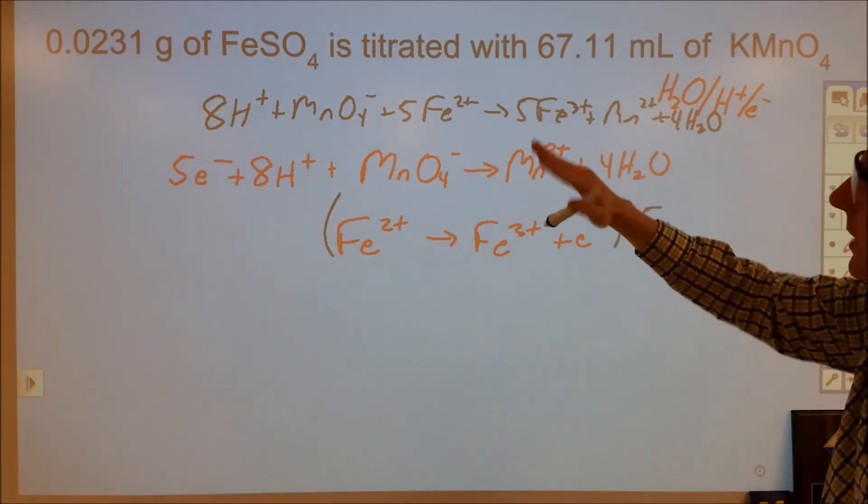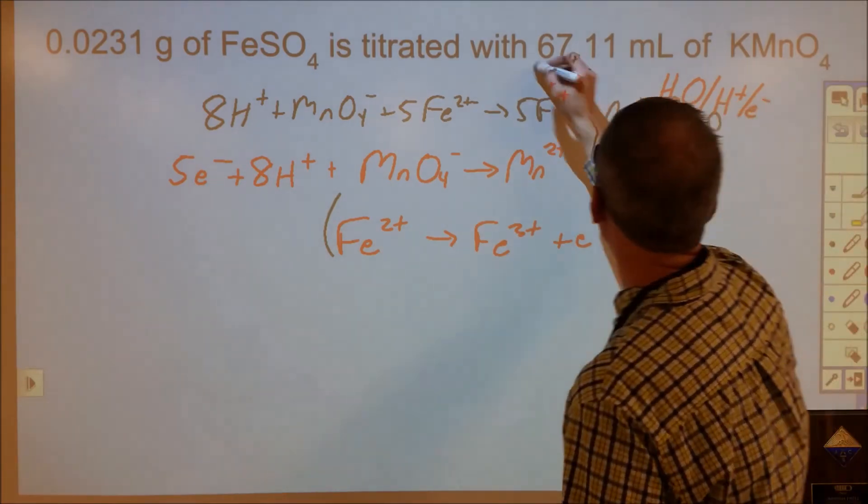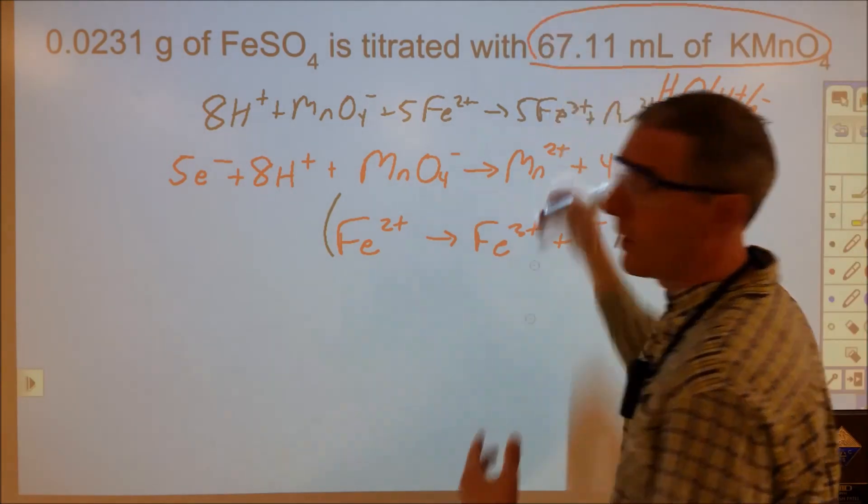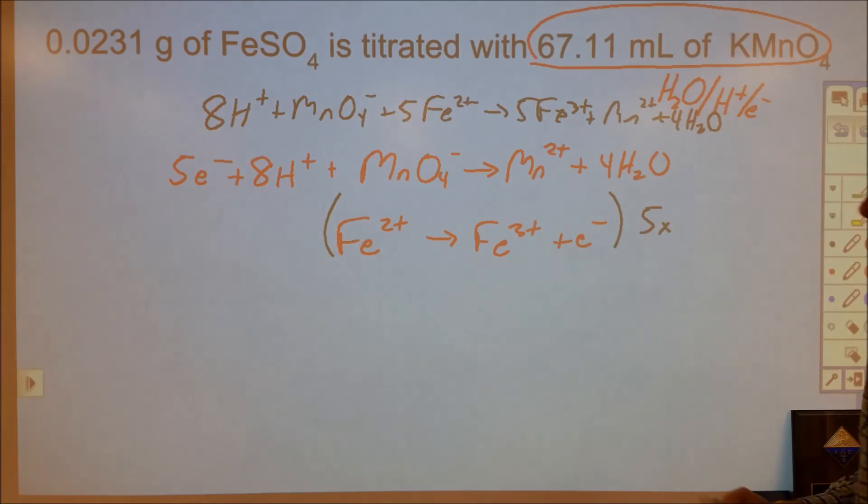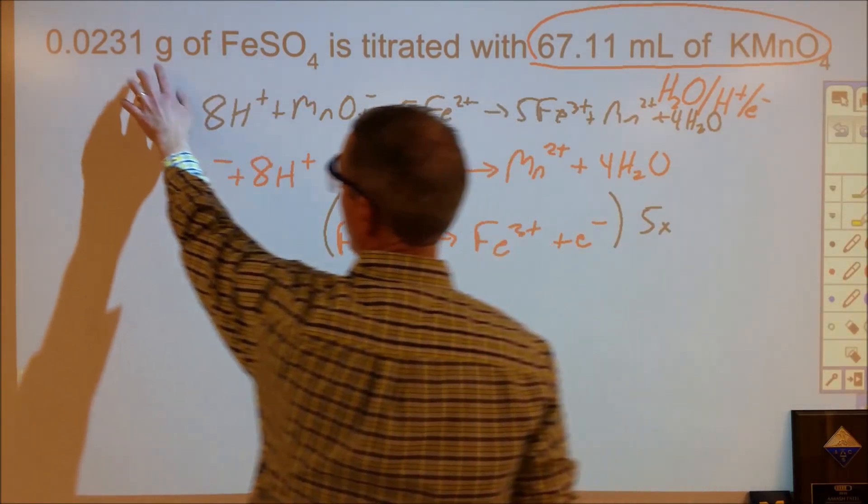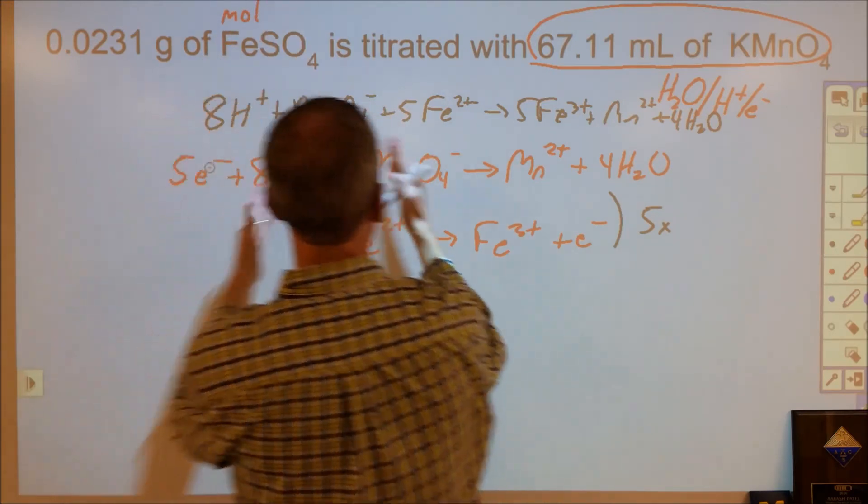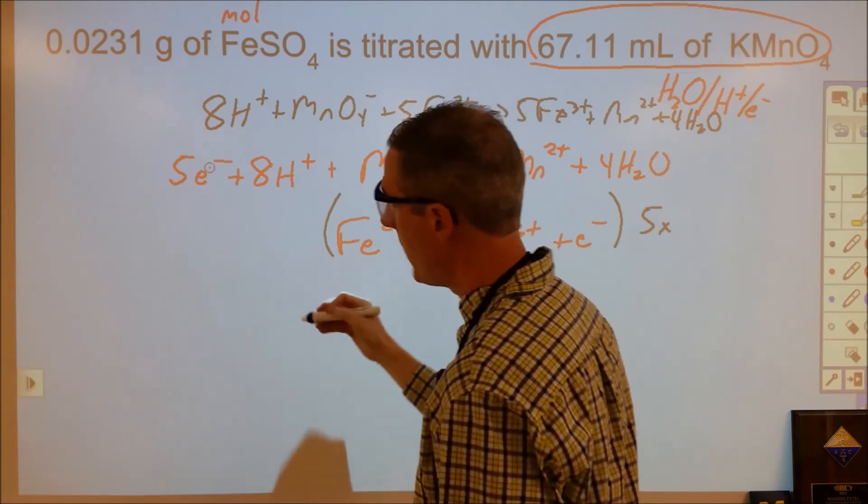So now that I'm done with that, now I want to look at what do I have in this. So I have a volume of the solution, so that potentially could work with molarity and volume. And then over here I have the grams and the chemical formula. So this is great because I have grams and a chemical formula. I can find moles of the Fe²⁺. So I want to start with that.